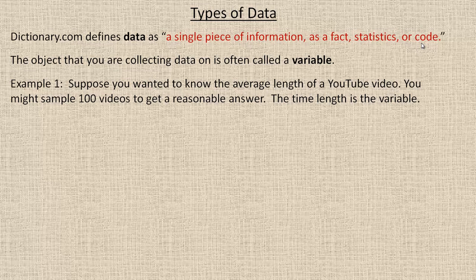The object that you're collecting data on is often called a variable. In this example, suppose you want to know the average length of a YouTube video. You might sample a hundred videos to get a reasonable answer. The time length would be the variable in this case.